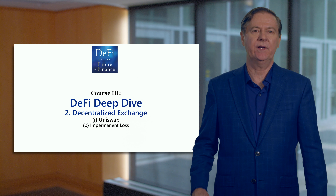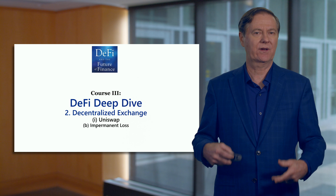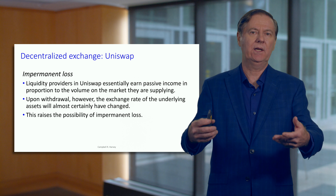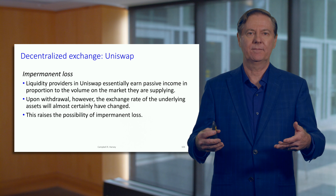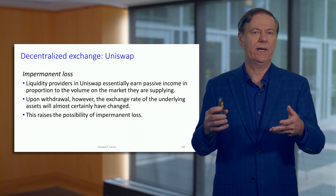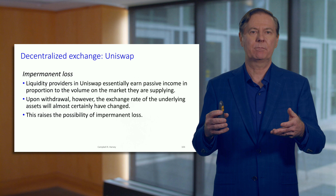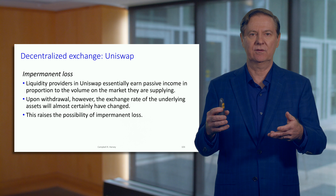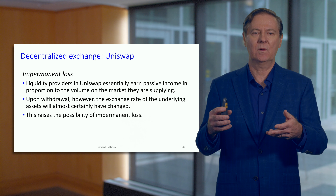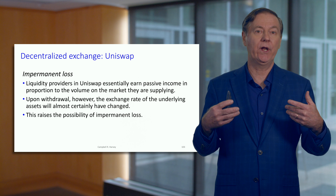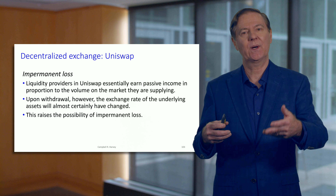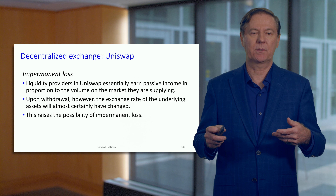We've introduced the idea of impermanent loss before, and let's go through it again in the context of Uniswap. Liquidity providers supply the capital, and because of the nature of this constant product automated market maker, there will be some impermanent loss as the exchange rate actually changes. Even though liquidity providers are earning a rate of return based upon the volume of trading within the pool, there's also a cost associated with this in terms of impermanent loss.